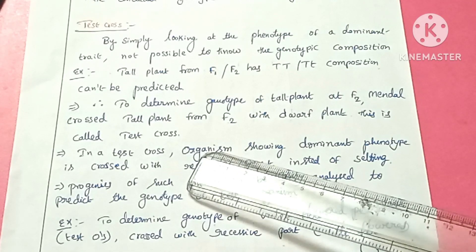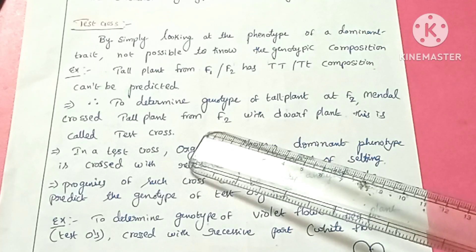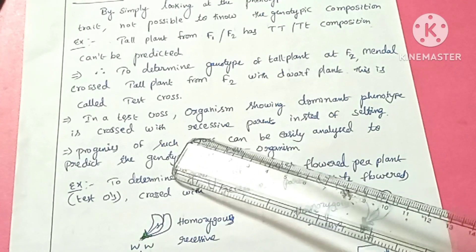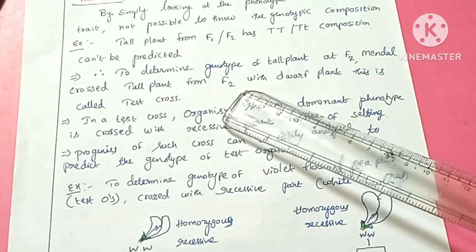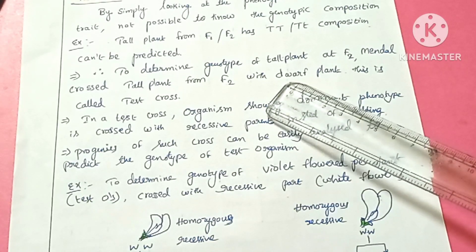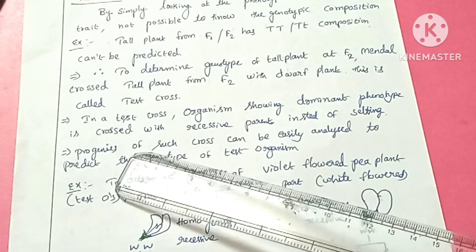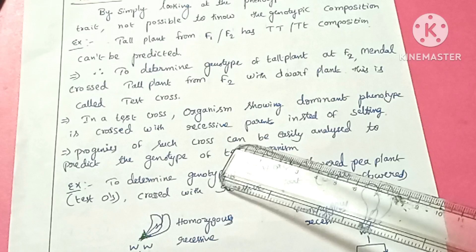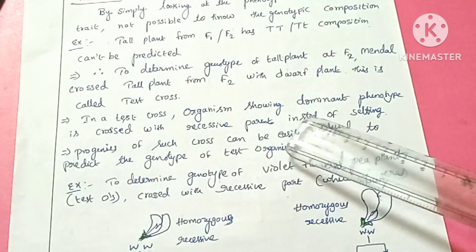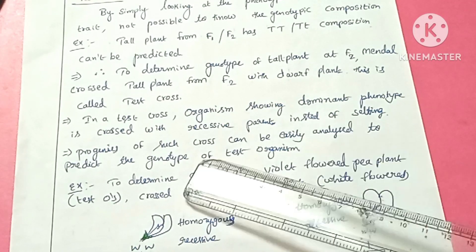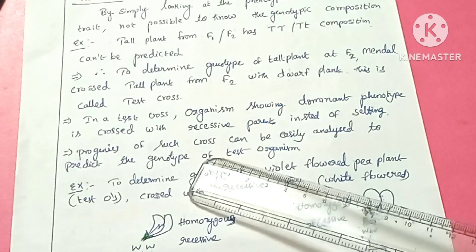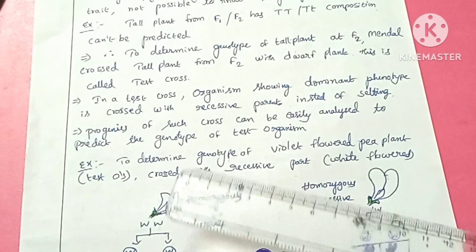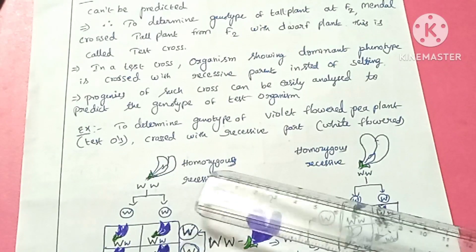So to determine the genotype of a tall plant at F2, Mendel crosses the tall plant from the F2 generation with a dwarf plant instead of self-pollination. This crossing with a recessive parent is called a test cross. The test cross is when an organism showing the dominant phenotype is crossed with the recessive parent instead of selfing.